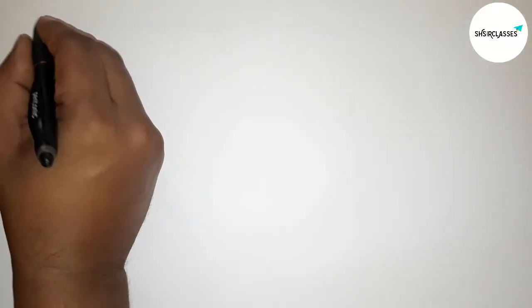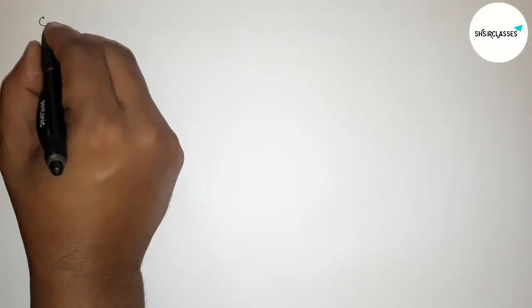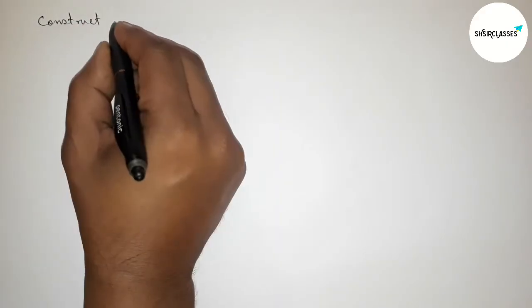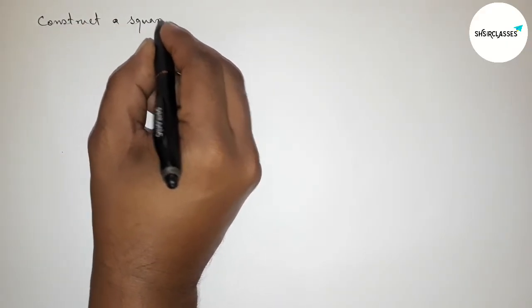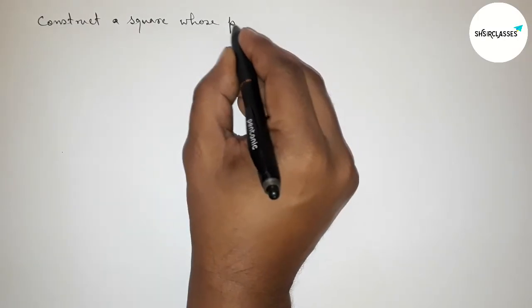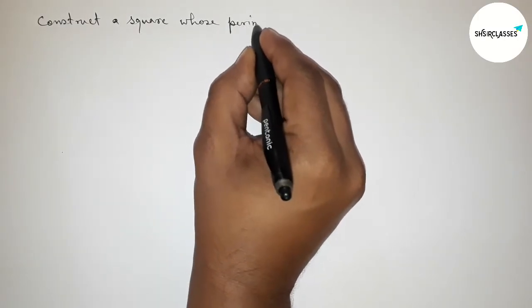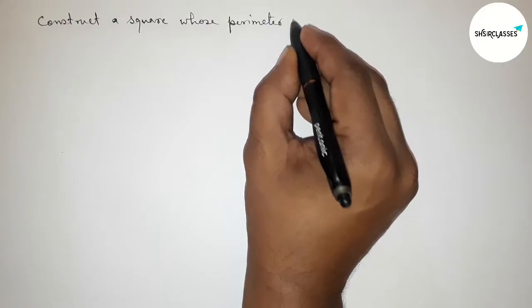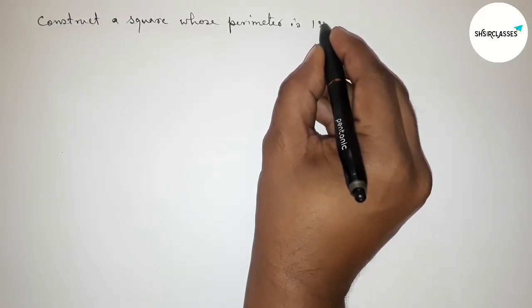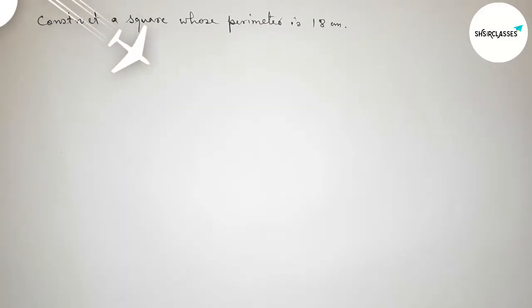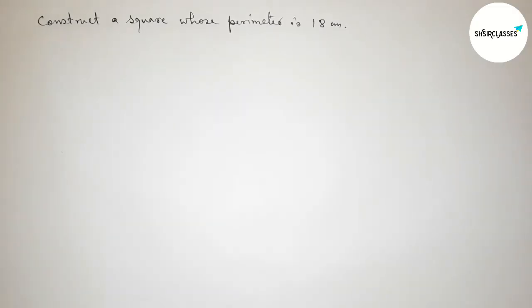Hi everyone, welcome to SI Share Classes. Today in this video we have to construct a square whose perimeter equals 18 centimeters. Please watch the video till the end. Let's start.